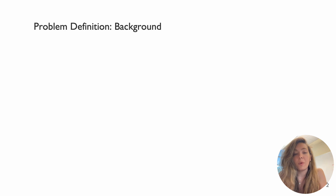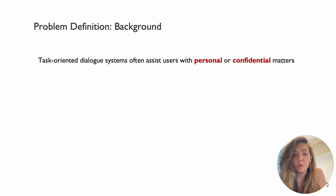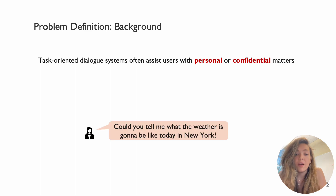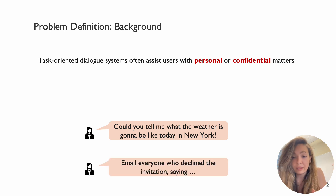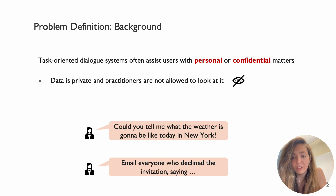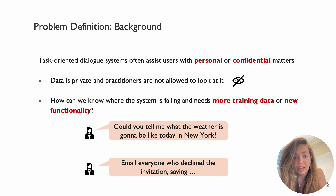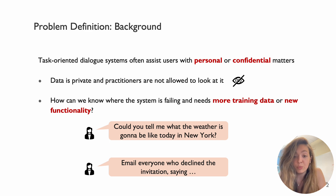First I'm going to talk about our problem setup. We're looking into improving the performance of task-oriented dialogue systems. However, the problem is that these models normally work with personal or confidential data. For example, users are interacting with our chatbot and asking things like 'could you tell me what the weather is going to be like in New York today?' or 'email everyone who has declined my invitation.' This data is private, so practitioners are not allowed to look at it, which means it's hard to know where the system is failing, whether it needs new training data to improve its linguistic coverage, or if we want to add new functionality that users want but we're not providing.